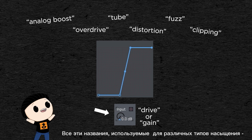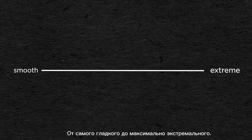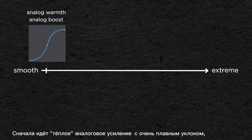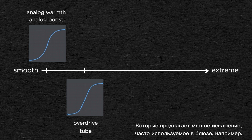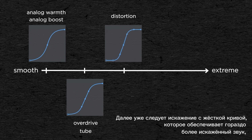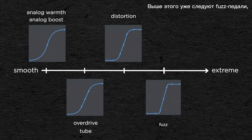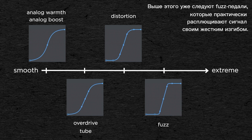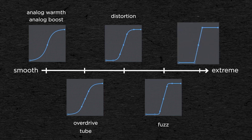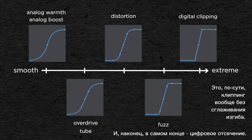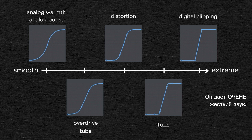All the terms used for different types of saturation are different combinations of these parameters. From the smoothest to the more extreme: there's the analog warmth or analog boost, with a very smooth slope that barely distorts the waveform. Then the overdrive or tube that offers a gentle distortion, often used in blues. Then the distortion, with a harder curve that provides a much more distorted sound, used a lot in rock and hard rock. Above that are the fuzz pedals that really squash the signal with a hard curve, used a lot in hard rock and metal. And at the end of the spectrum is digital clipping with no slope at all, which gives a very harsh sound.